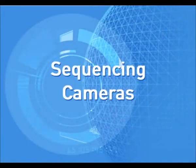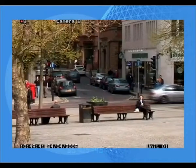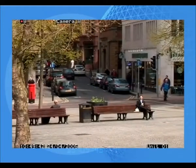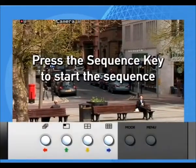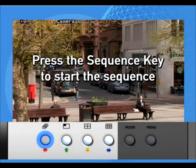Sequencing cameras. The DS2 allows you to select a sequence of cameras on the monitor. Press the Sequence key to switch to a continuous sequence of images.